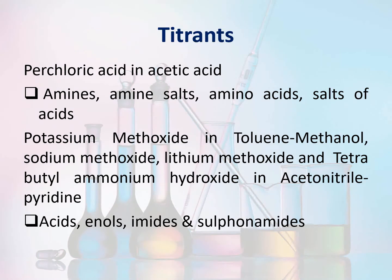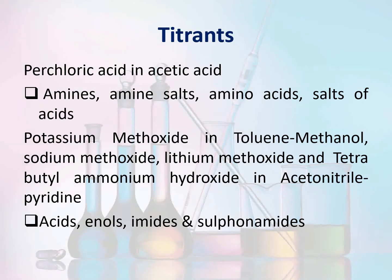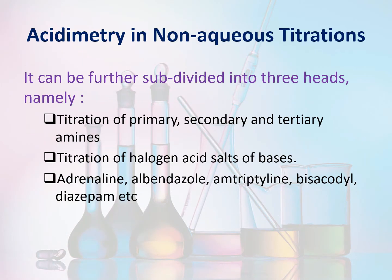Titrants used in non-aqueous titration: For assay of weakly basic substances, perchloric acid in acetic acid is the titrant. Perchloric acid in acetic acid is used for assay of amines, amine salts, amino acids, and salts of acids. For assay of weak acids, the various titrants used include potassium methoxide in toluene-methanol, sodium methoxide in toluene-methanol, lithium methoxide in toluene-methanol, and tetrabutylammonium hydroxide in acetyl pyridine.